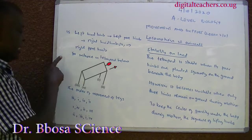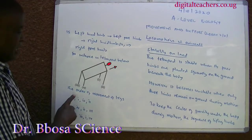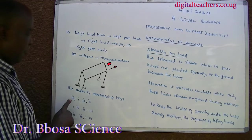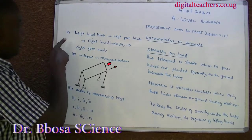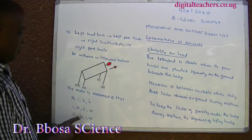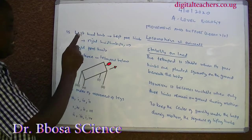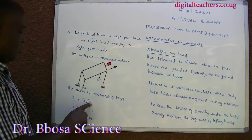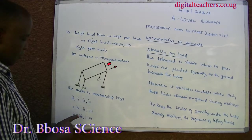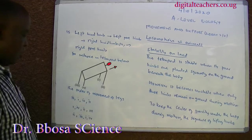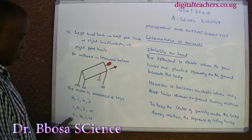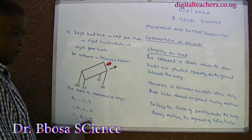For instance, the order of movement of the legs follows sequences such as: 3 (left hind limb), 1 (left fore limb), 4 (right hind limb), and 2 (right fore limb). Other sequences include: 1, 4, 2, 3; or 2, 3, 1, 4; or 2, 3, 1, 4.